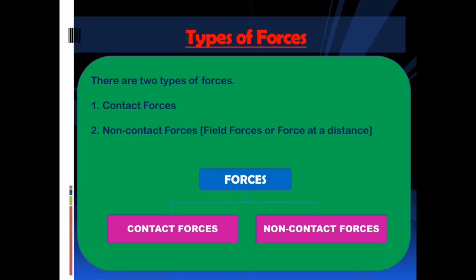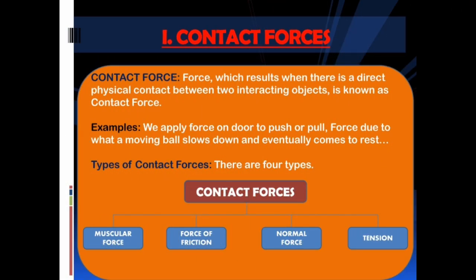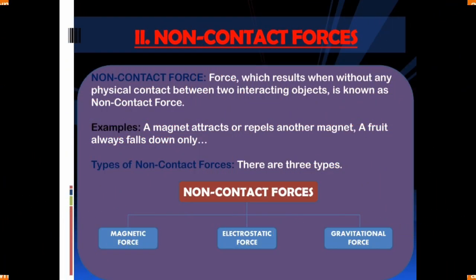Types of forces: there are two types. First, contact forces. Second, non-contact forces, which are also called field forces or forces at a distance. Contact force is the force which results when there is a direct physical contact between two interacting objects. Examples: we apply force on a door to push or pull; force due to friction causes a moving ball to slow down and eventually come to rest. Types of contact forces: muscular force, force of friction, normal force, and tension.